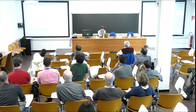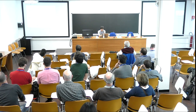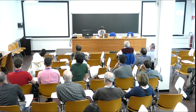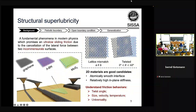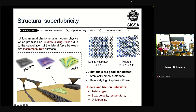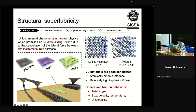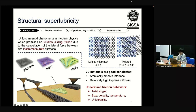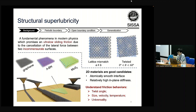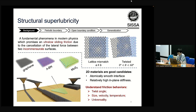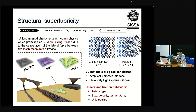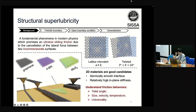Superlubricity is an extremely low sliding friction due to incommensurate contacts, and usually we can achieve incommensurate contacts by lattice mismatching and twisting. 2D materials like graphene, hexagonal boron nitride, and molybdenum disulfide are good candidates for superlubricity since they have atomically smooth interfaces and relatively high in-plane stiffness.